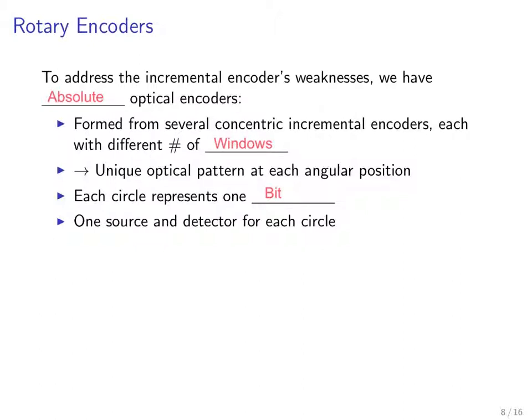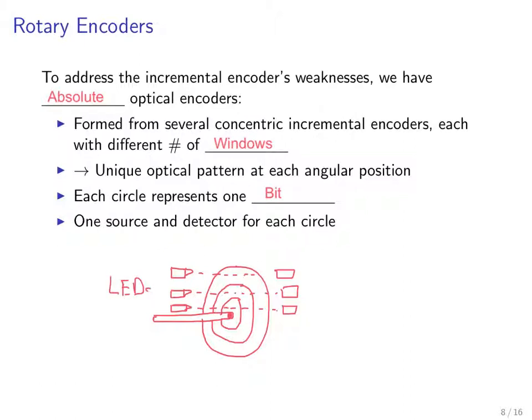In that binary value, each circle represents one bit in that binary number. One source and one detector for each circle. Each circle requires its own source and detector. So you get a device with multiple concentric circles. Here are your LEDs on the left side, and here are your photodiodes on the right side.